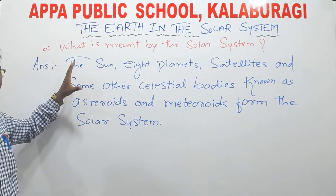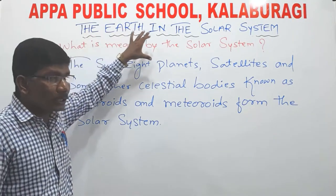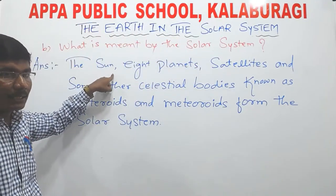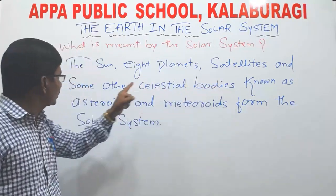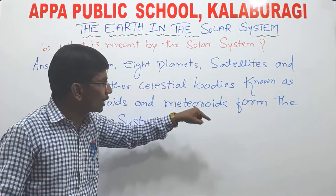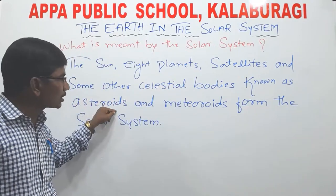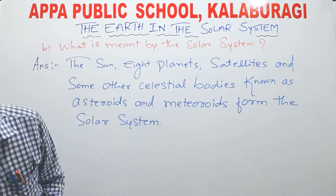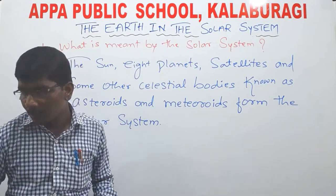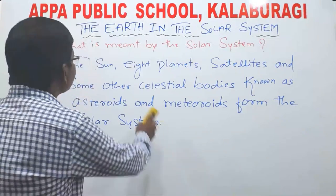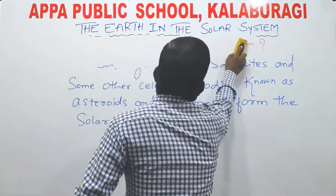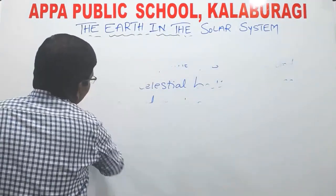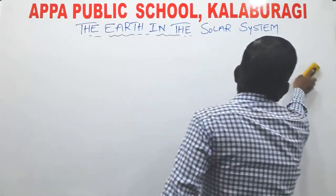Let me revise once again. Question number two: what is meant by the solar system? The answer is: the sun, eight planets, satellites, and some other celestial bodies known as asteroids and meteorites form the solar system. Understood children? If you heard the lesson carefully you can answer all the questions.